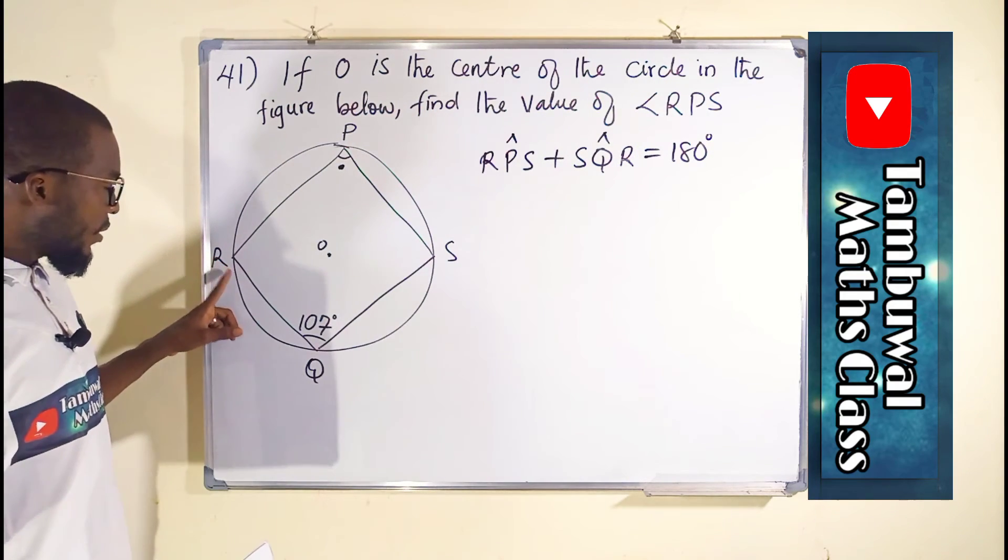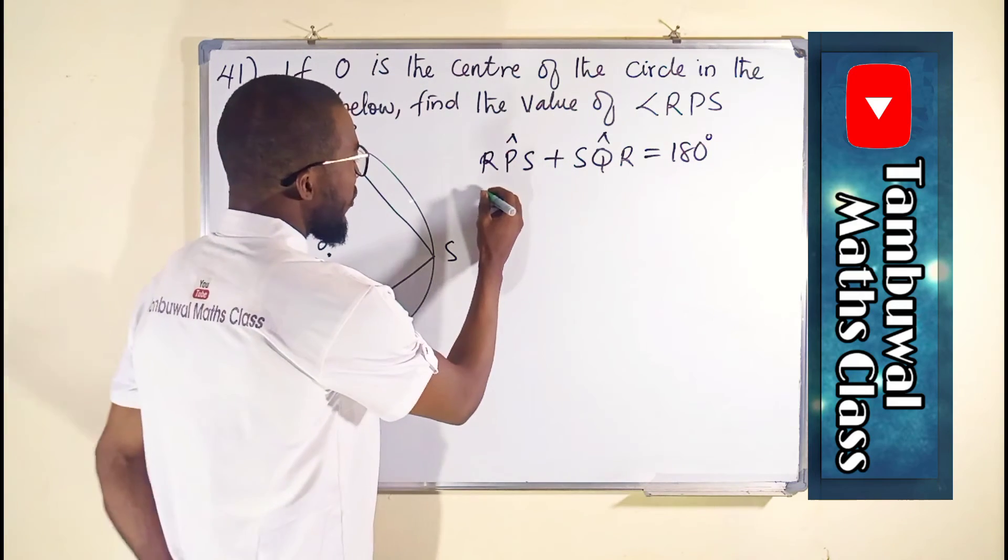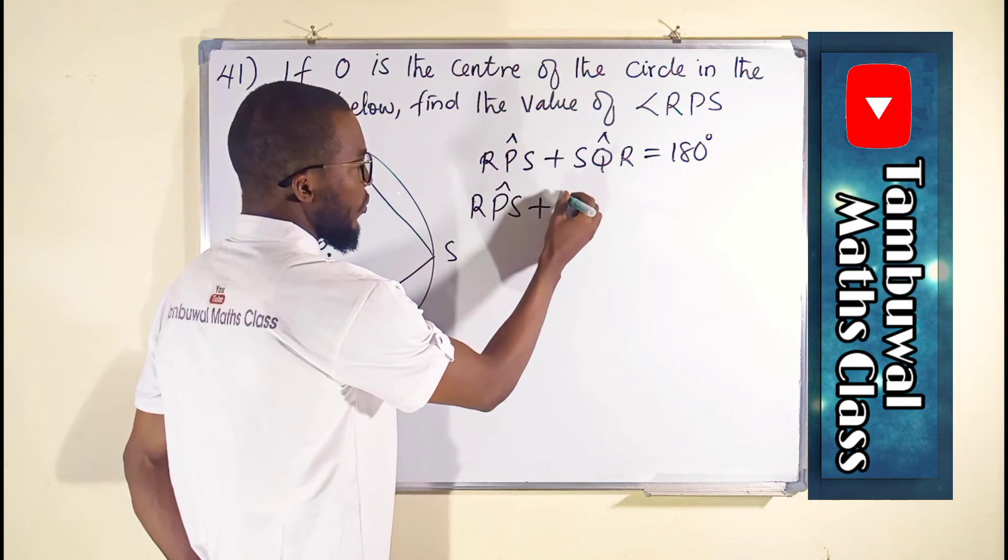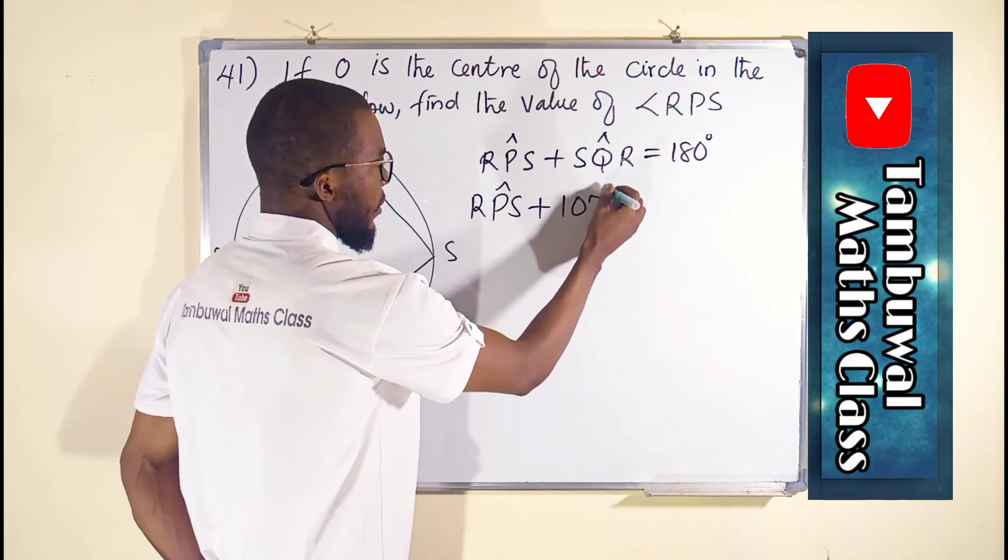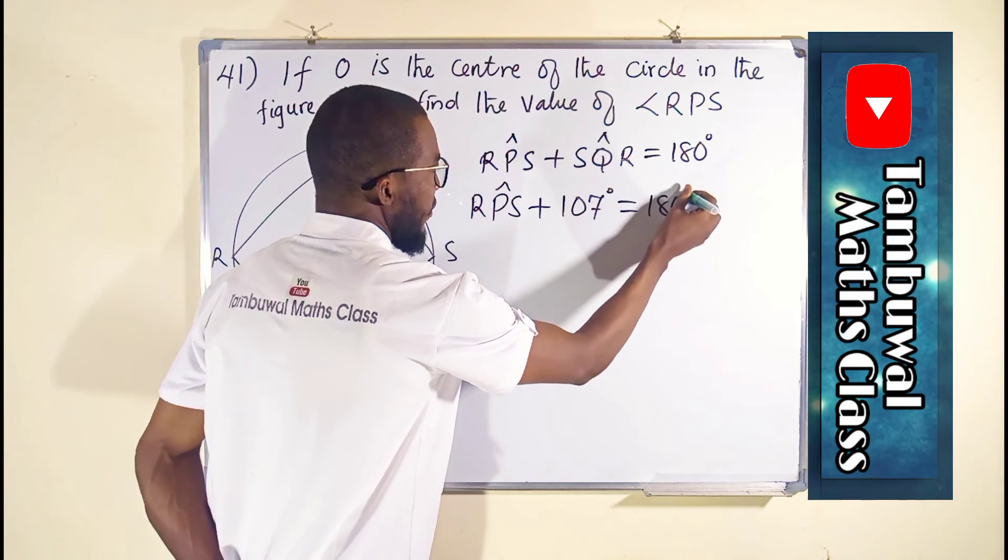But this one is already given as 107 degrees, so we can substitute that. RPS plus 107 degrees equals 180 degrees.